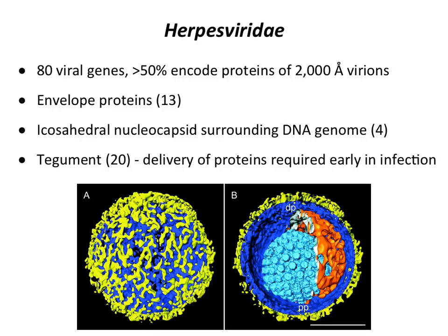Let's look at herpes viruses for a sense of how large complex viruses are built. Herpes viruses have about 80 viral genes, and over half go towards building the capsid, which is 2,000 angstroms in diameter and contains 13 envelope proteins. There are 4 proteins that make up the icosahedral capsid, and then there is a tegument made up of 20 proteins between the envelope and the icosahedron. In the cryo-EM reconstruction you can see the icosahedral capsid in light blue, the envelope in dark blue with glycoproteins, and the orange tegument layer between them.